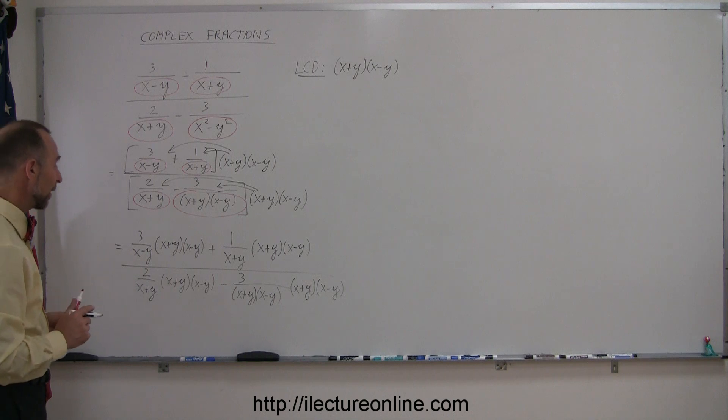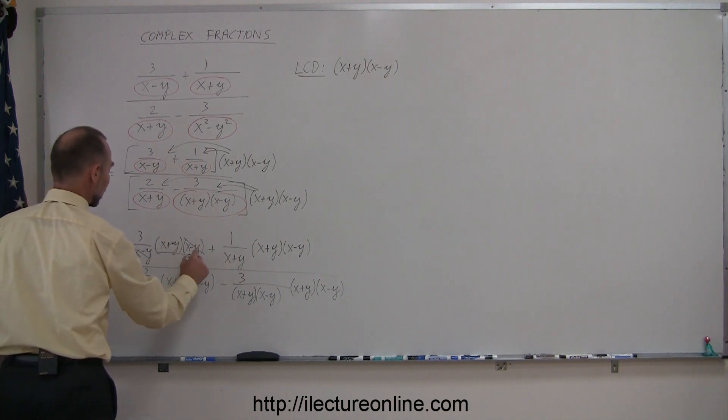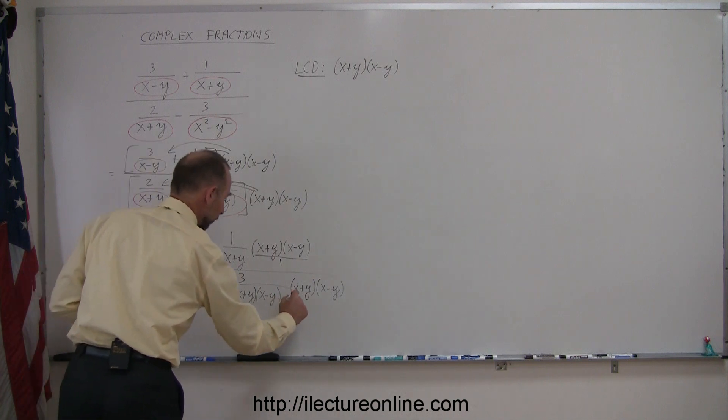Now we can go ahead and simplify things. Notice that we have an x minus y, and x minus y here, so they cancel out, because that's in the numerator, that's in the denominator. We can think of this as over 1, to make it a little simpler like that.